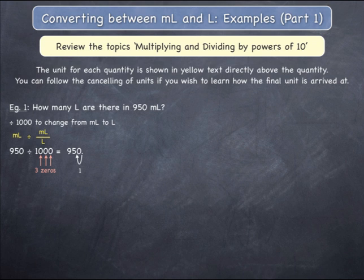One jump, two jumps, and three jumps. This gives 0.950. The units of milliliters cancel, leaving only litres, which becomes the final unit.